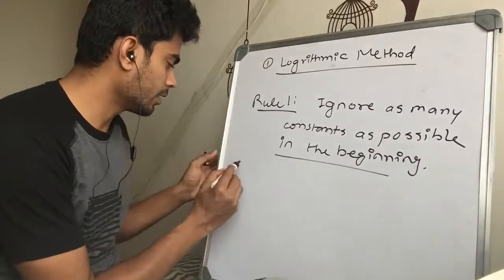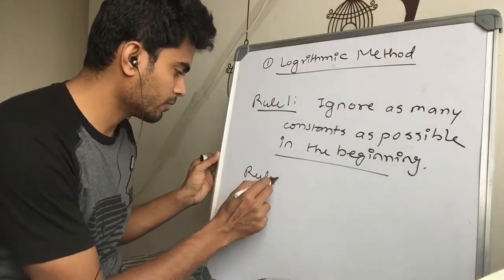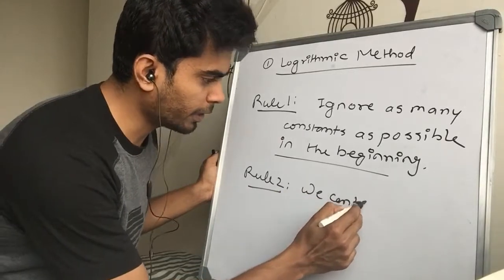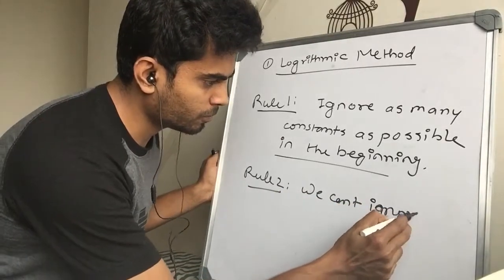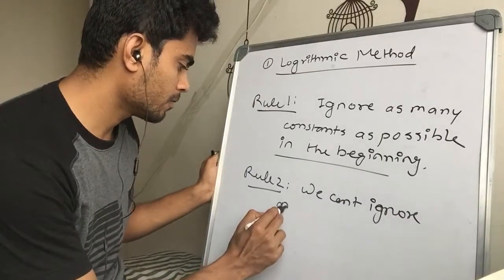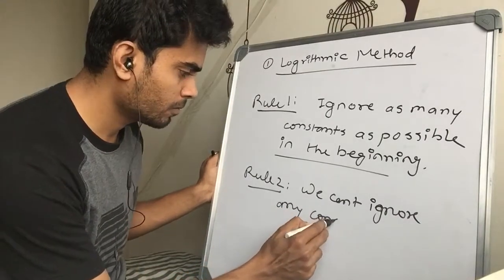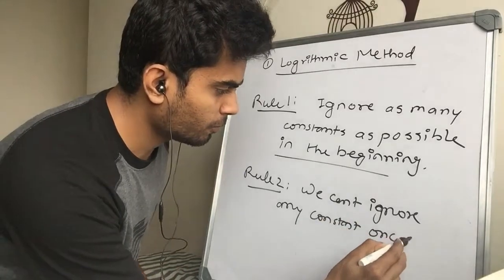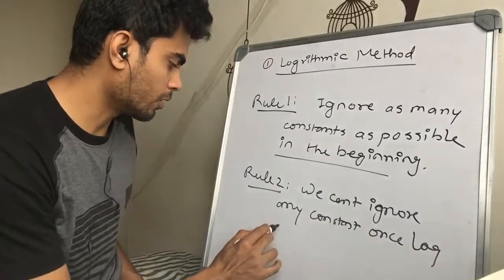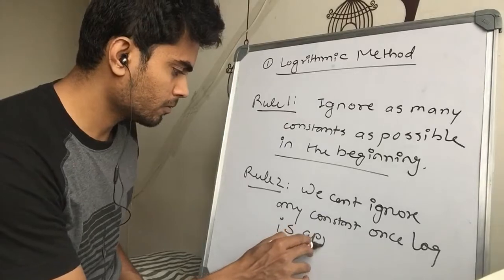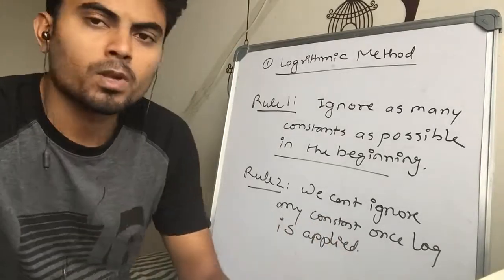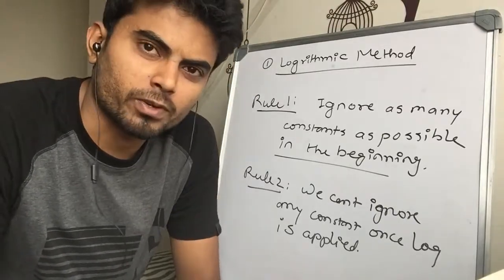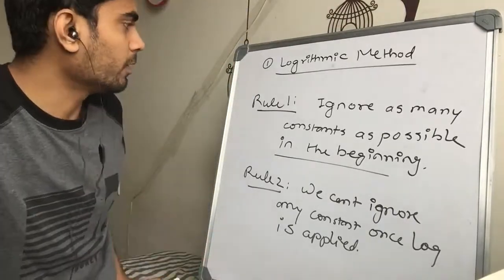Rule 2 is: you cannot ignore any constant once log is applied. So those are quite basic rules. Let's go through an example to understand them one by one.